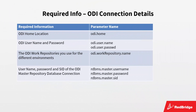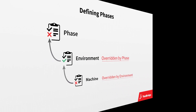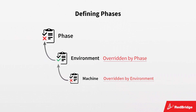For an easy setup of the phases, it is recommended to collect the following information: the ODI home location, the username and password for ODI in the master repository, the ODI work repositories, and the SIDs of the master repositories. Parameters can be defined on phase, environment, or machine level. The phase parameter takes precedence over the environment parameter, which in turn takes precedence over the machine parameter.